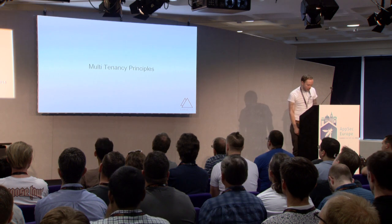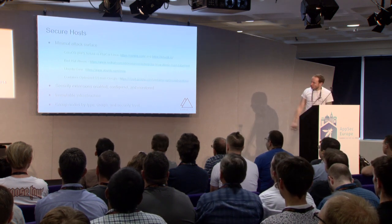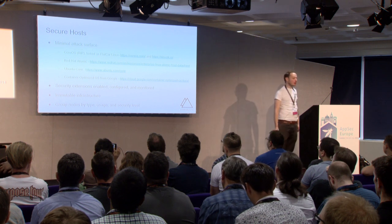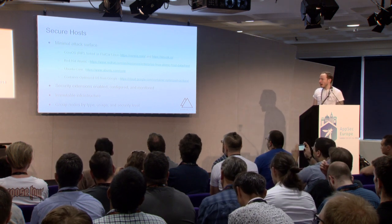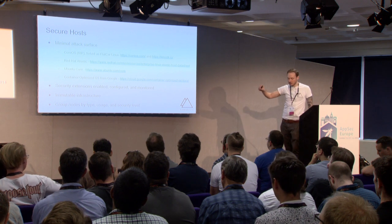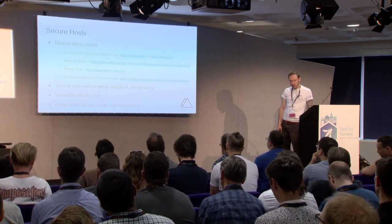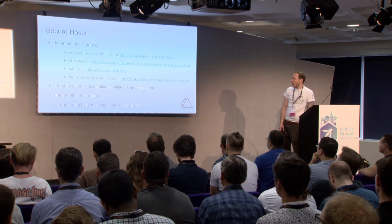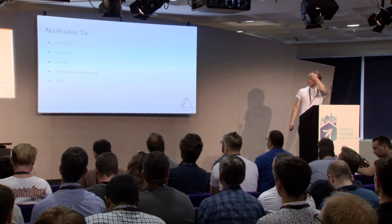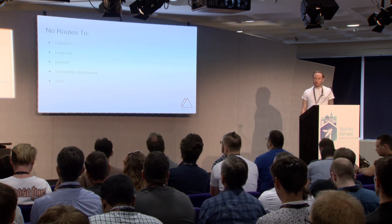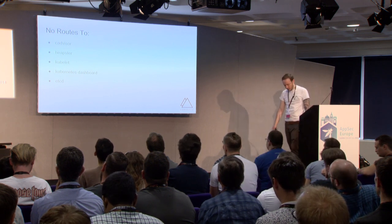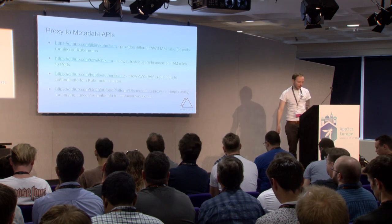Let's recap for securing our hosts: minimal operating systems, seccomp, AppArmor, SELinux enabled, and immutable infrastructure to prevent configuration drift. Containers run immutably and you can even run them with an immutable filesystem flag so they don't write to anywhere apart from temp. Grouping nodes by type is really useful. We don't want network access to anything from our pods — this is a common source of escalation — including the cloud provider metadata API. The attack surface is wide and broad, but there are ways to proxy to the metadata API — it's a solved problem.